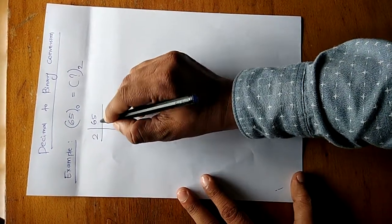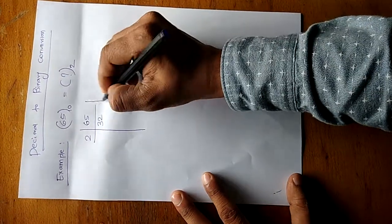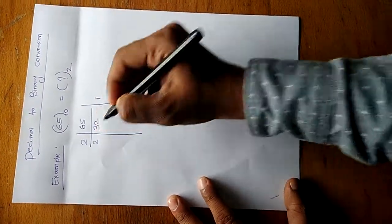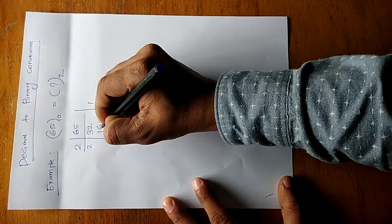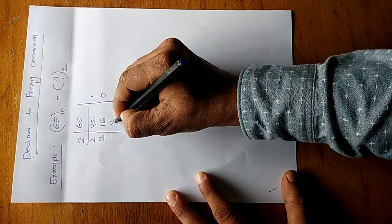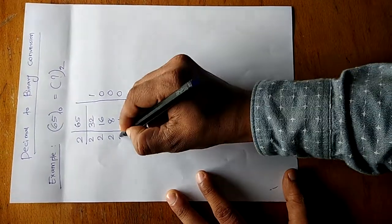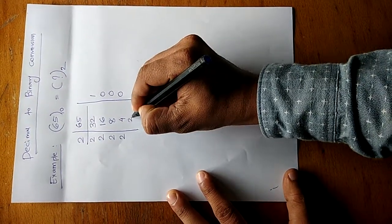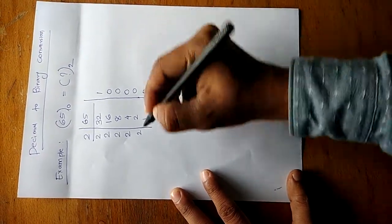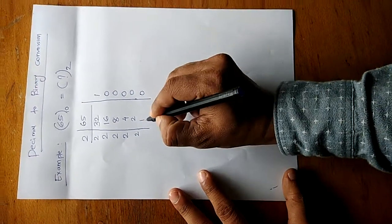If we multiply 2 with 32 we get 64, so the remainder is 1. Then again divide by 2: 2 times 16 is 32, remainder 0. Likewise, 2 into 8 is 16 remainder 0, 2 into 4 is 8 remainder 0, 2 into 2 is 4 remainder 0, 2 into 1 remainder 0.